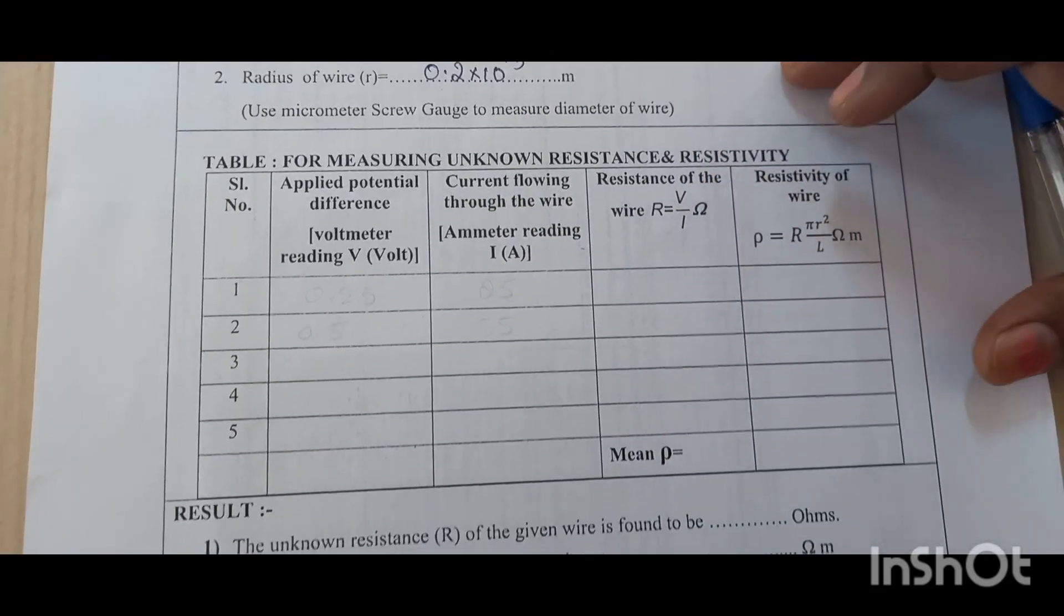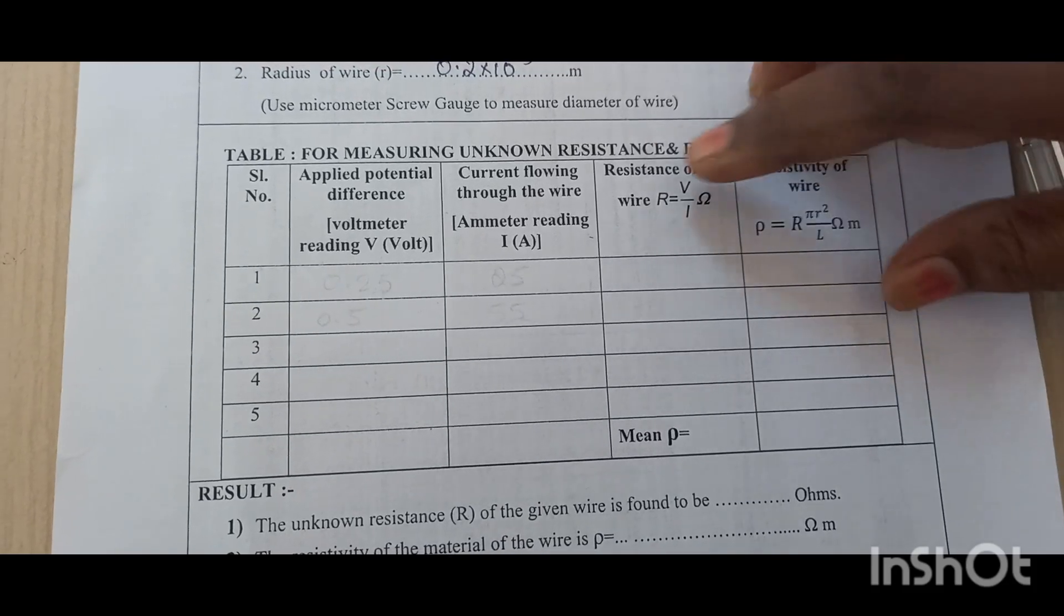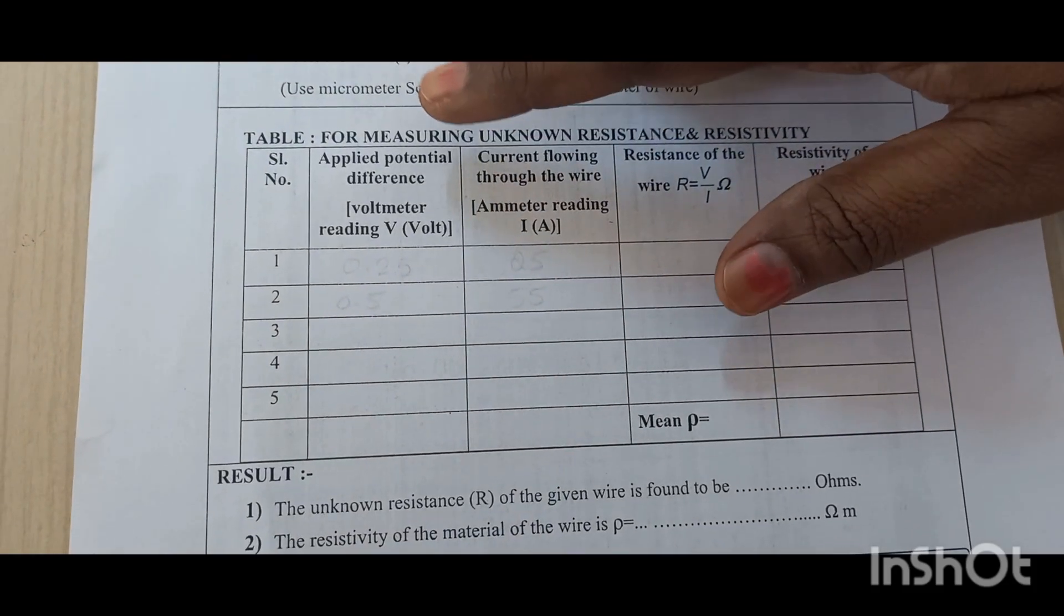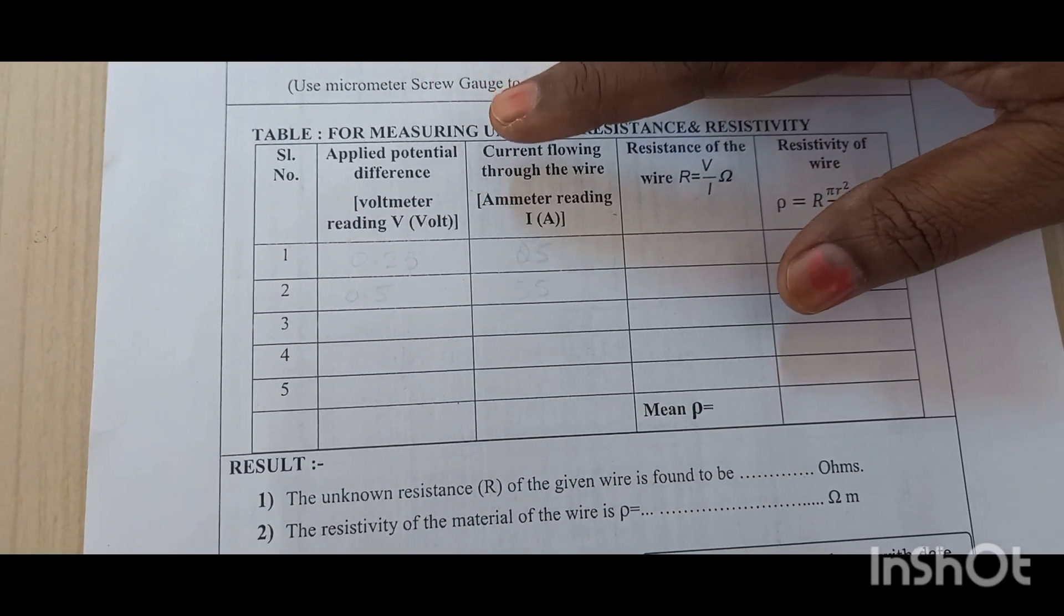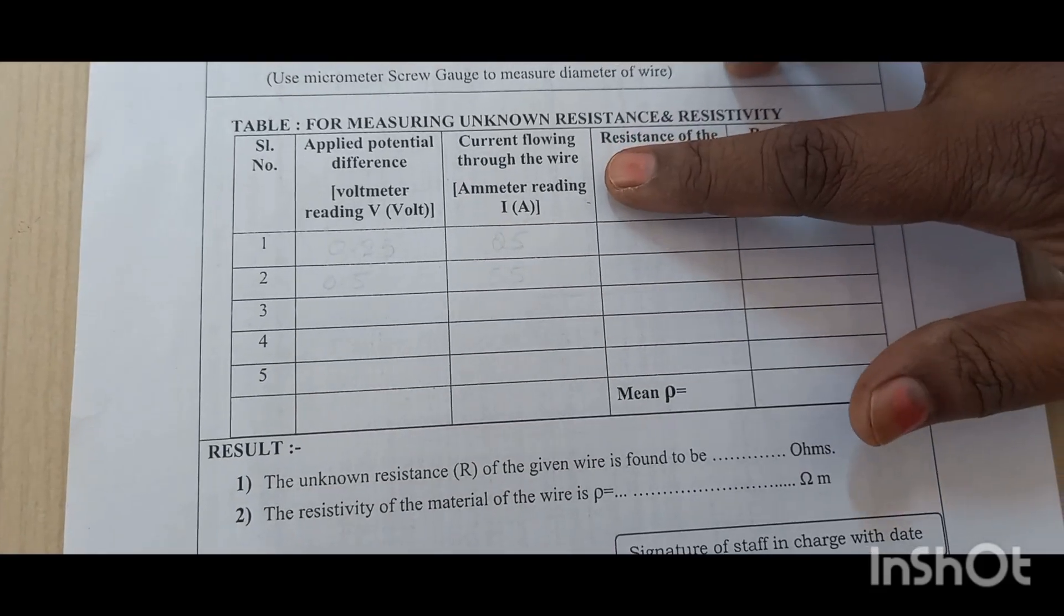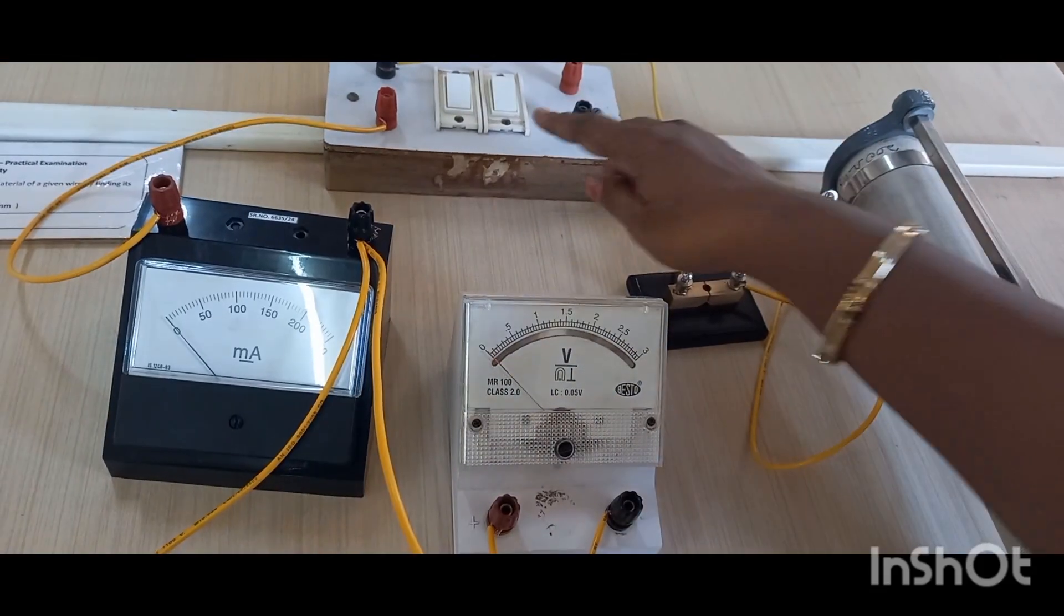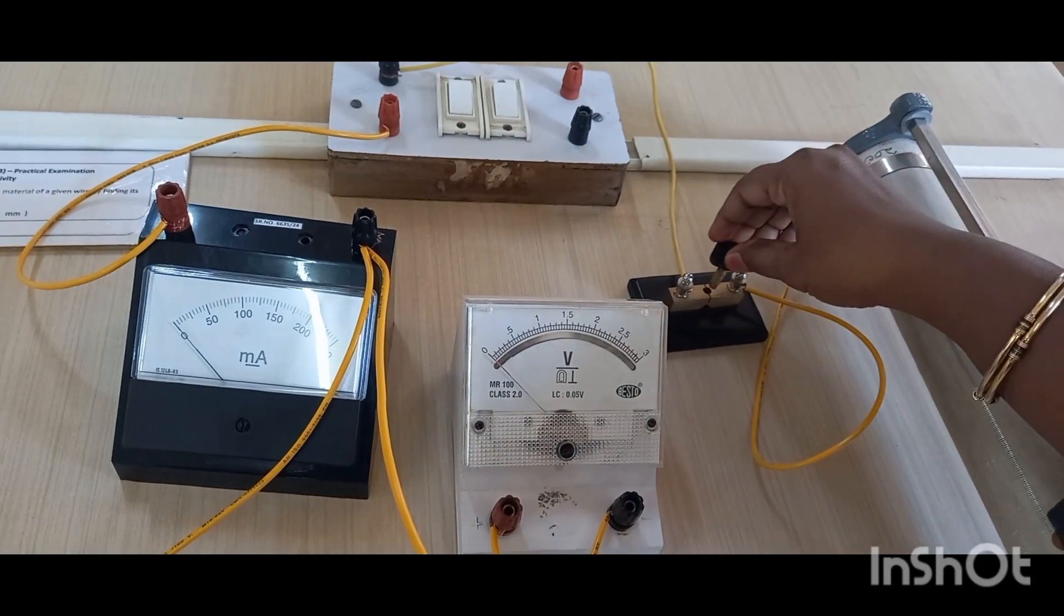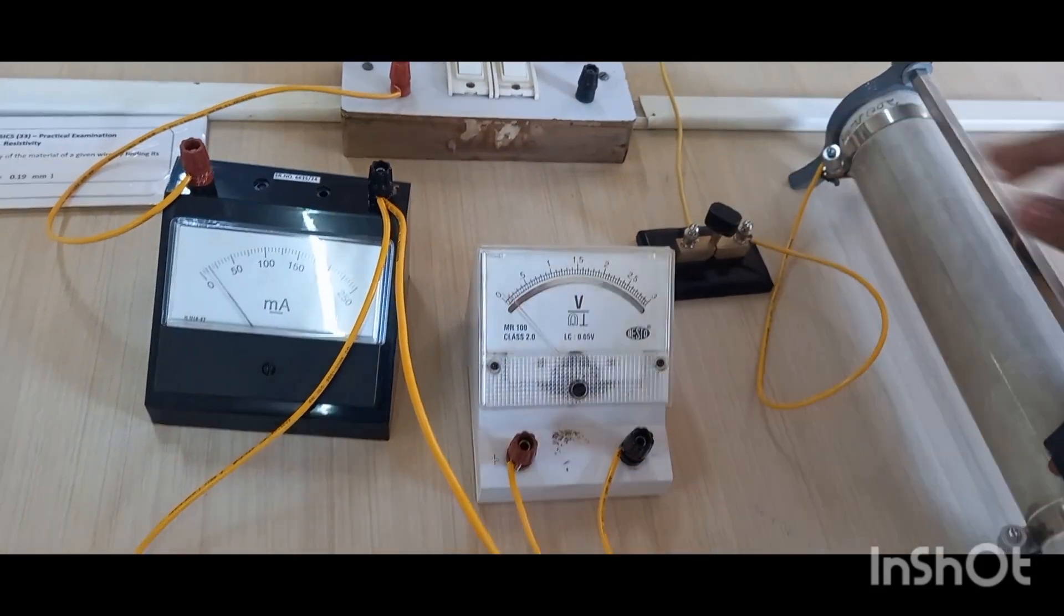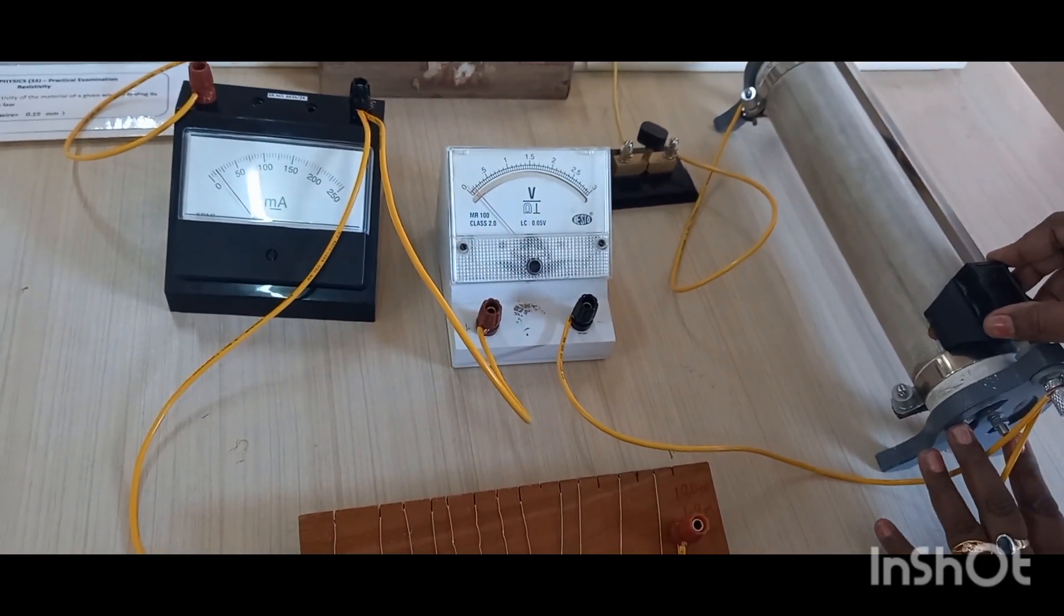So this is the tabular column for the resistivity of the experiment. Now we will see the potential difference across the wire and correspondingly measure the ammeter reading. Now I have turned on the battery, will put the key, then from zero let us start the readings.